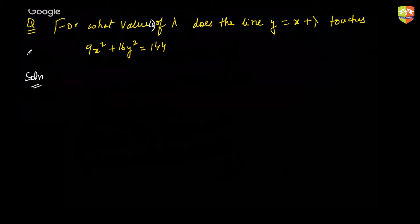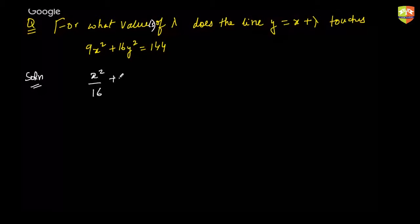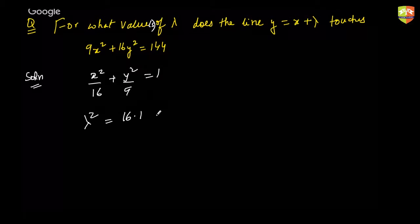Plus or minus 5 — absolutely correct! You can write this as x²/16 + y²/9 = 1, and you know that c² = a²m² + b², which gives b² = 9, so λ = ±5.